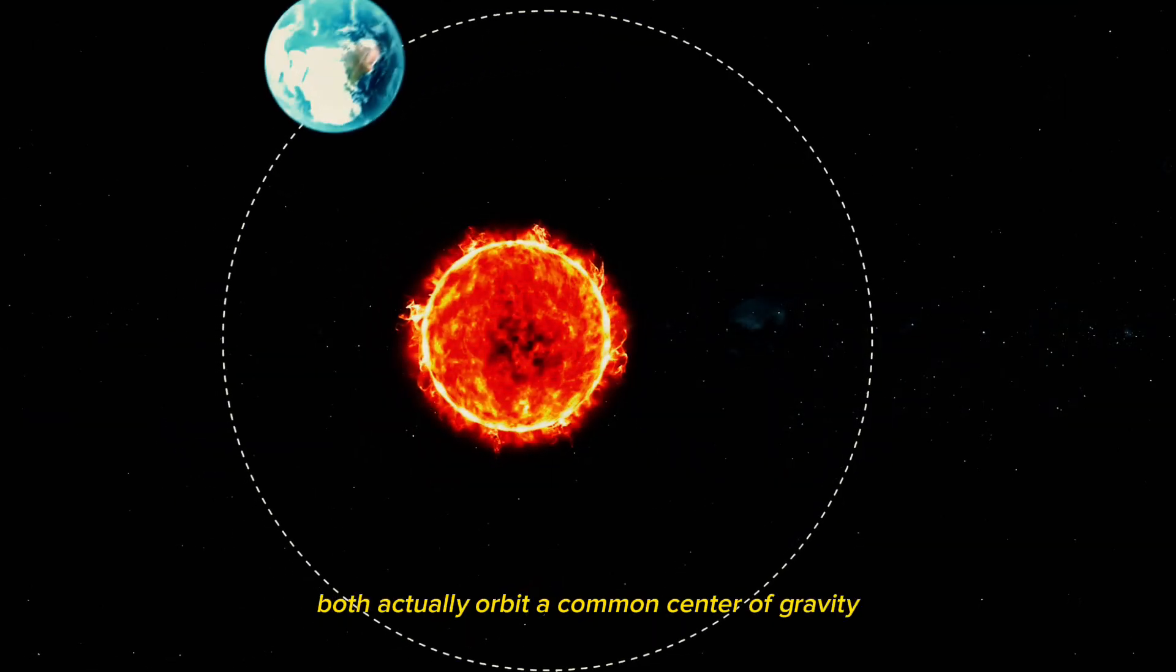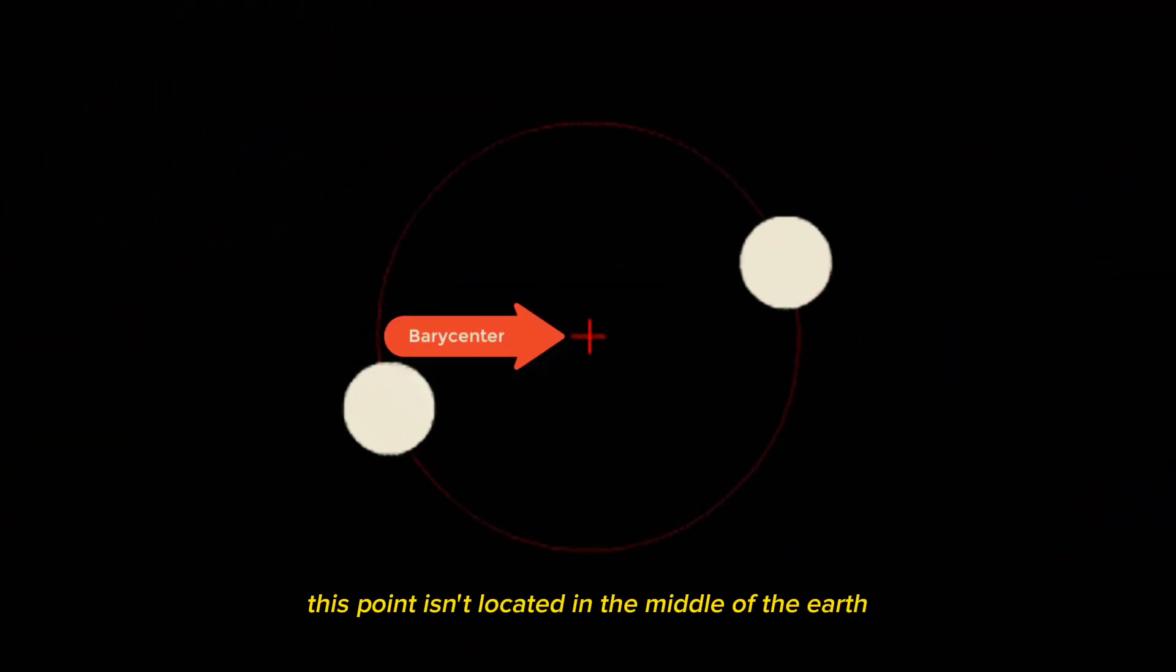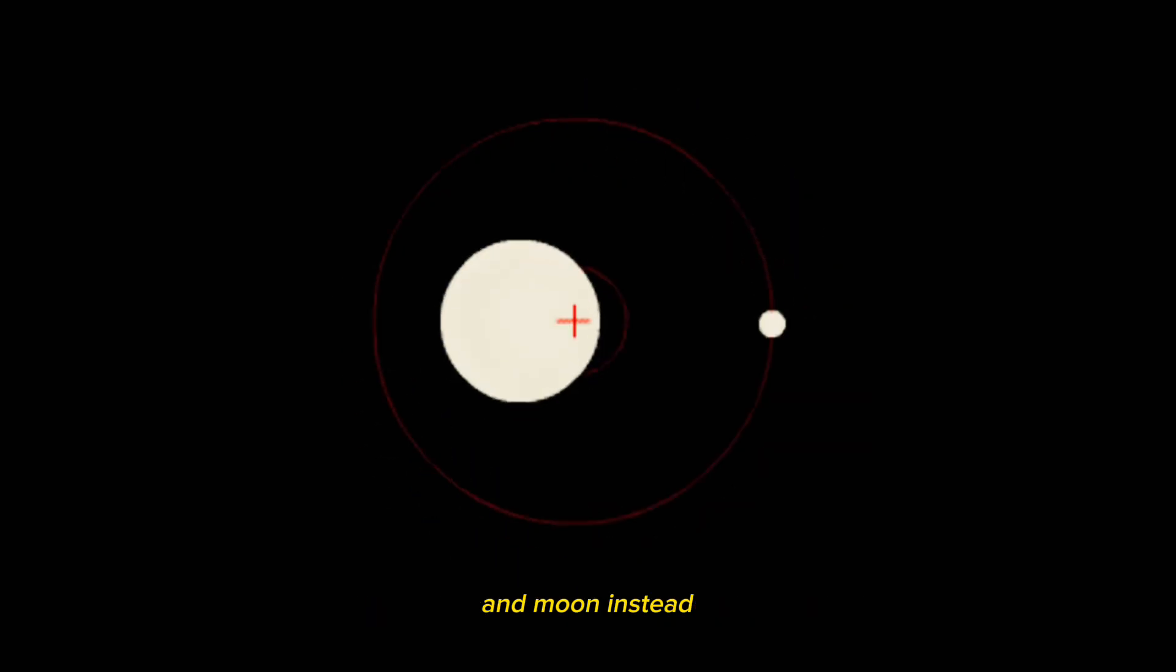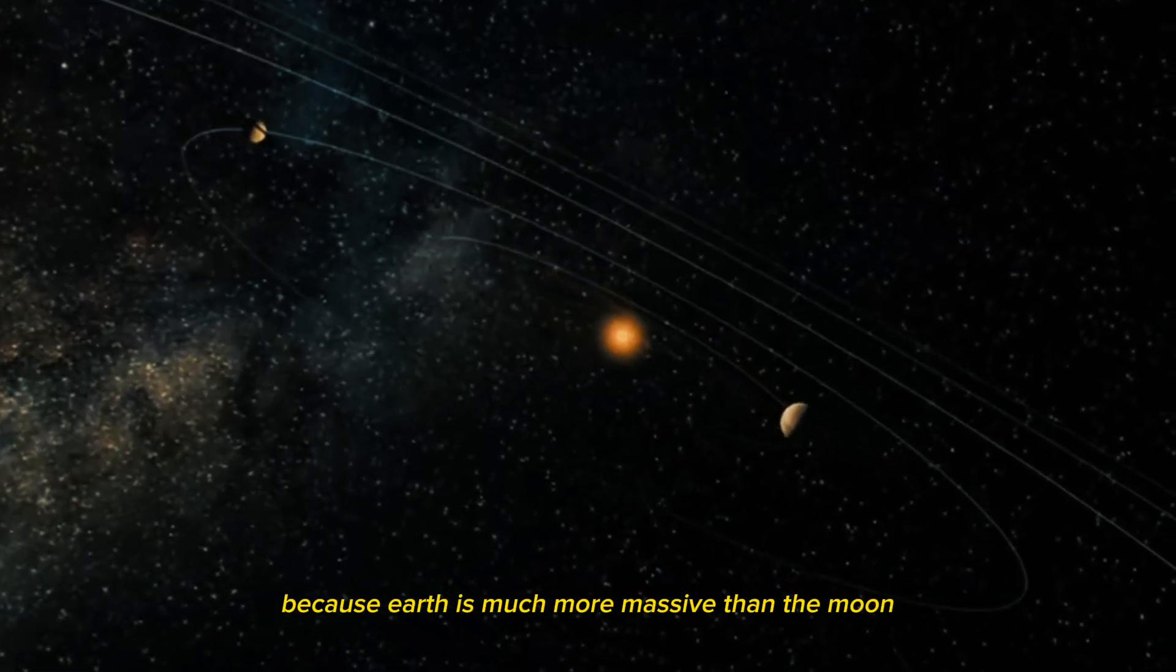The Earth and the Moon both actually orbit a common center of gravity, called the Barycenter. This point isn't located in the middle of the Earth and Moon. Instead, it's just below the Earth's surface, because Earth is much more massive than the Moon.